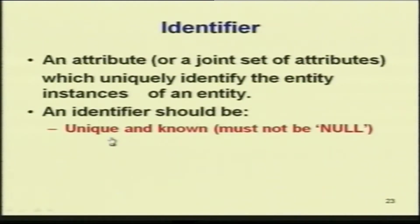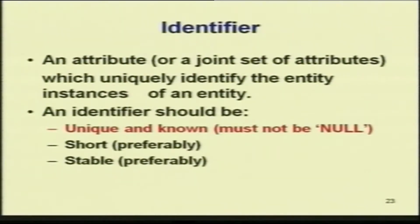The identifier should be unique and known, it must not be null, it should be short preferably, it should be stable and should not keep on changing. For example, talking about employees — ID number cannot keep changing, so you put ID as a key. If someone keeps changing houses often, then address is not a good identifier. There may also be 5 people living in the same house with the same address, so uniqueness is the most important property.